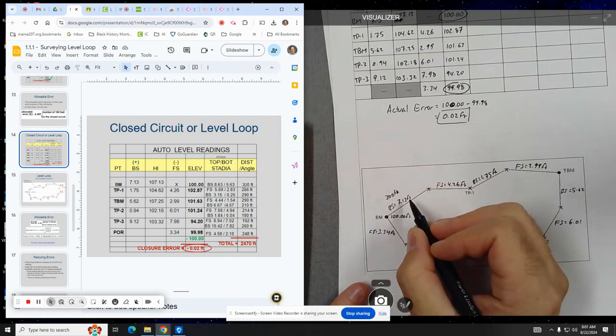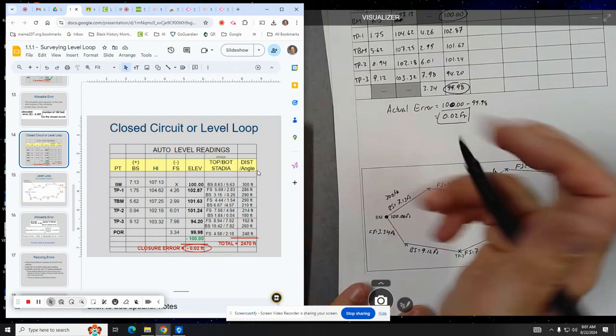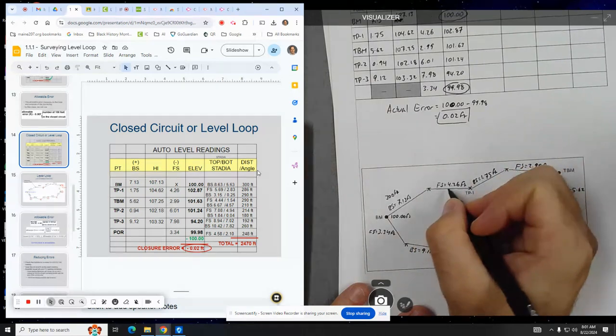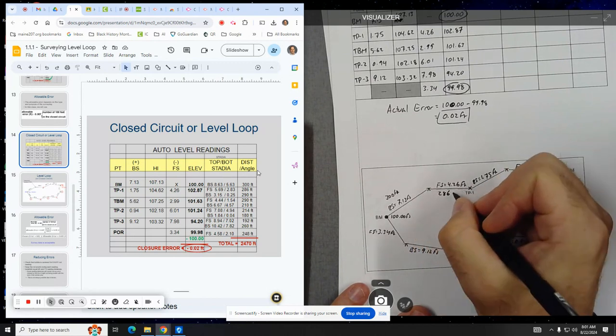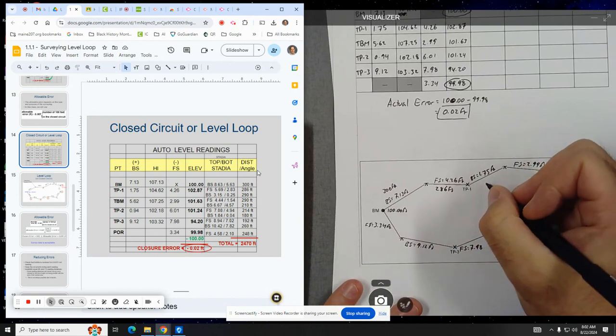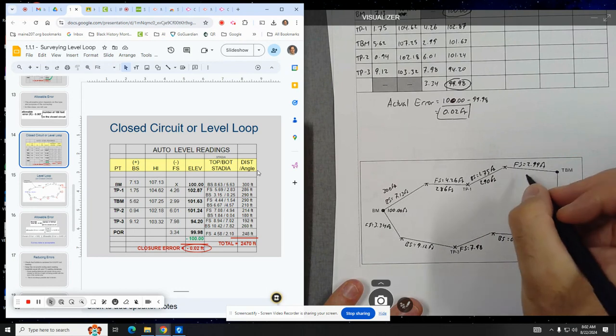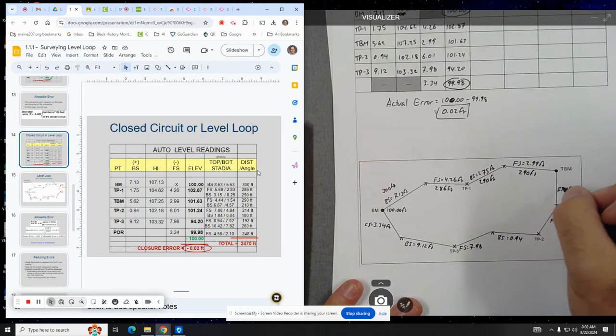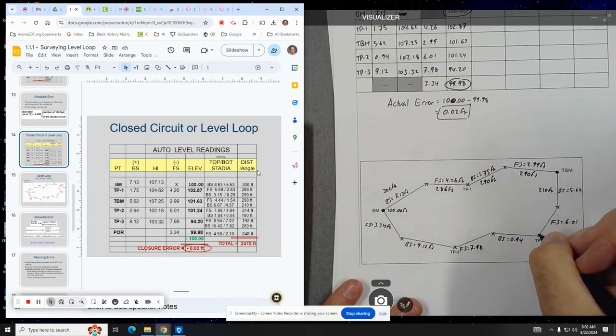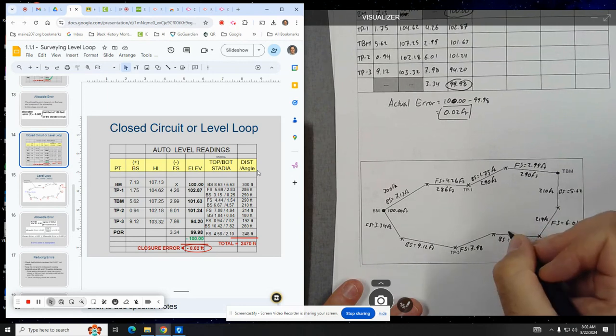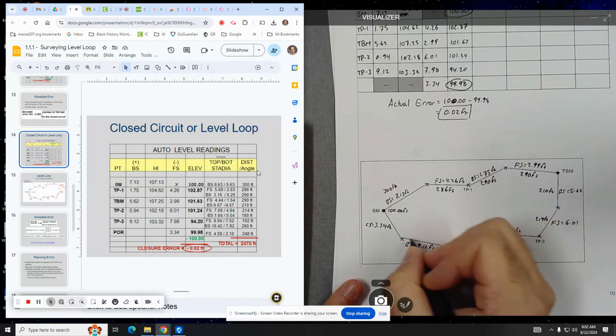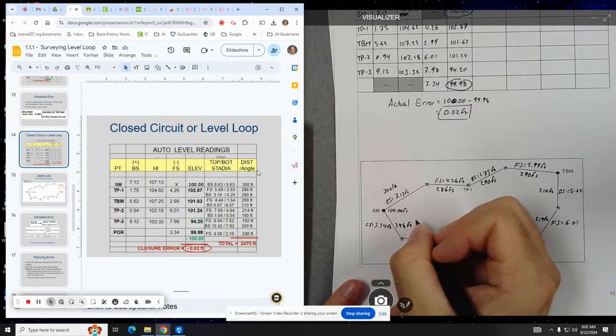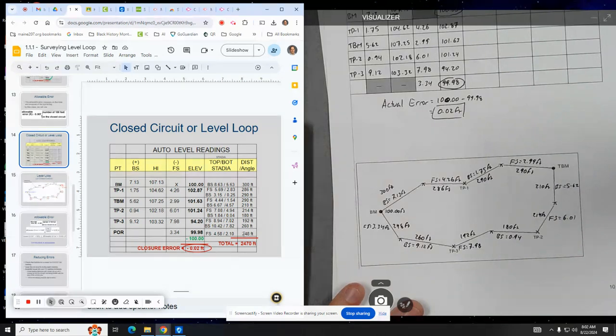And we'll, again, go through the details of how this stuff was figured out in the next practice problem. This distance here, from the instrument, TP-1 was 286 feet. The distance of this section here was 290 feet. The distance here was also 290 feet. The distance here is 210 feet. And the distance here is 214 feet. The distance here is 180 feet. The distance here is 192 feet. The distance here was 260 feet. And then the last distance is 248 feet. And if you're asking, where'd I get these numbers? It's this column here. Distance right here.